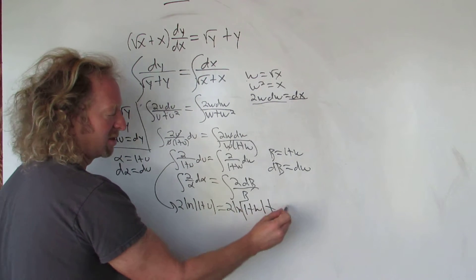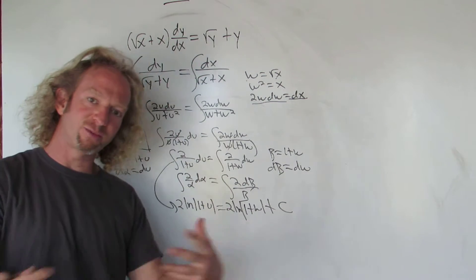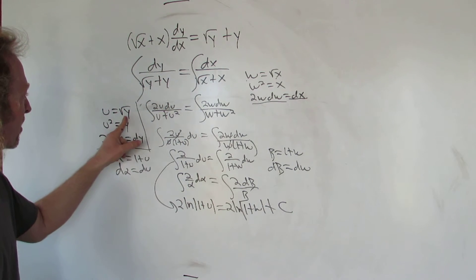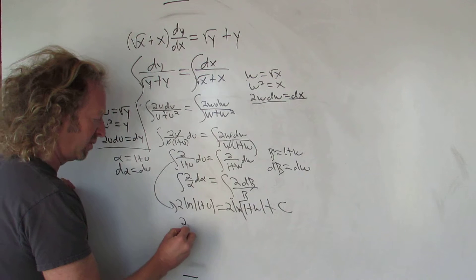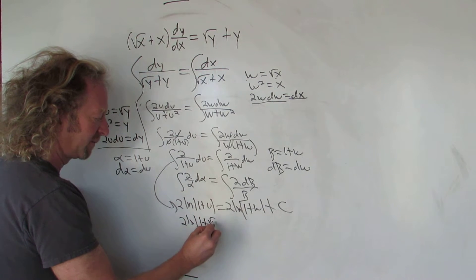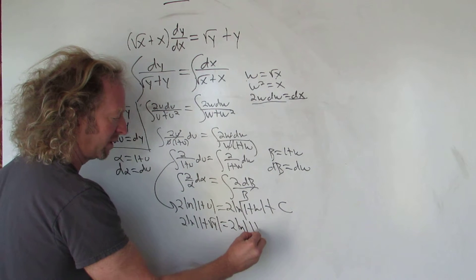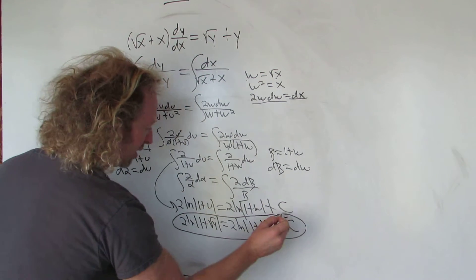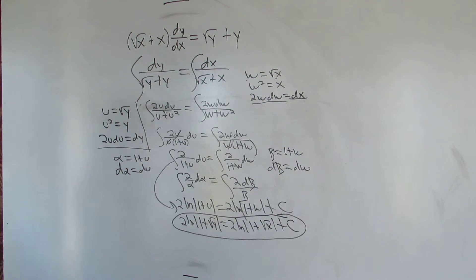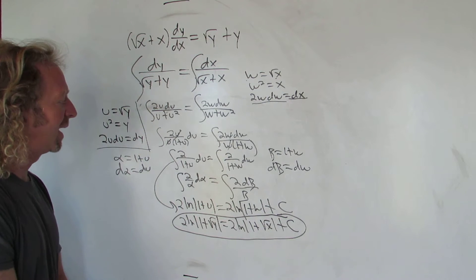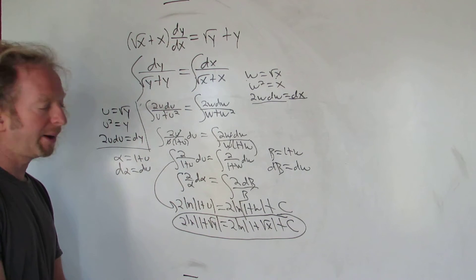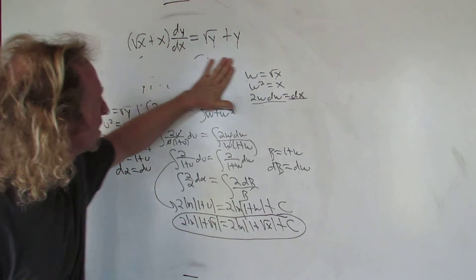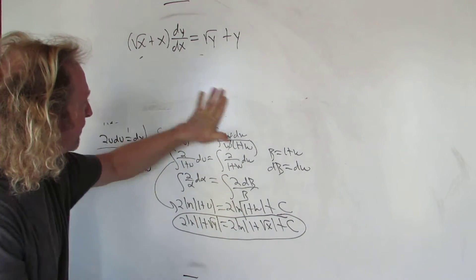You don't have to show all this work. This integrates to 2 ln|1 + u|. And on the right side, 2 ln|1 + w| + C — you only add the C once. Since u was the square root of y and w was the square root of x, we get 2 ln|1 + √y| = 2 ln|1 + √x| + C. This is an implicit solution to the differential equation. We could go further and solve for y — let's find an explicit solution.